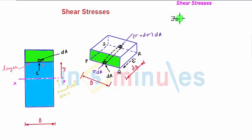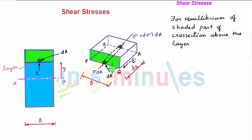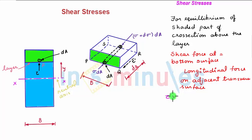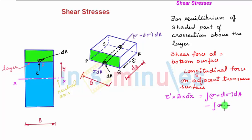For equilibrium of the shaded part of the cross-section above the layer, we have: the total shear force at the bottom surface is equal to the longitudinal force on the adjacent transverse surfaces. Mathematically, the shear force at the bottom surface is tau dash times the area b times delta x, and this equals the algebraic sum of longitudinal forces on the two transverse cross-sections: the integral of (sigma + d sigma) dA minus sigma dA.